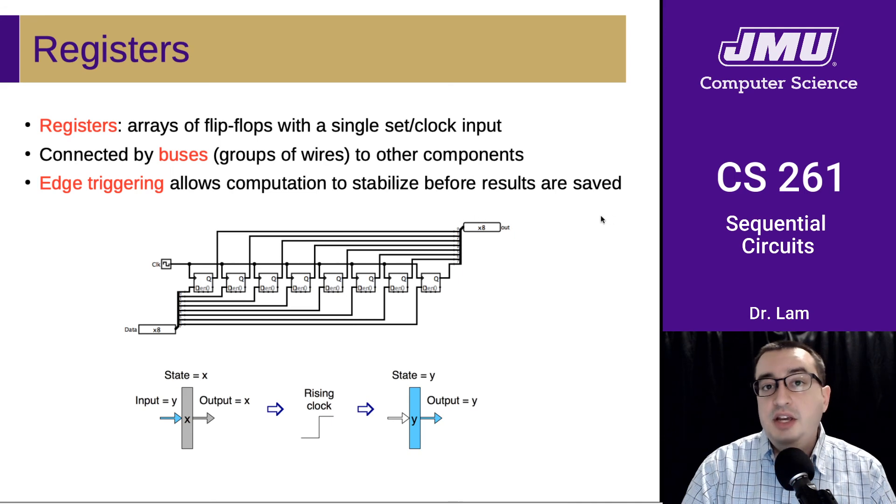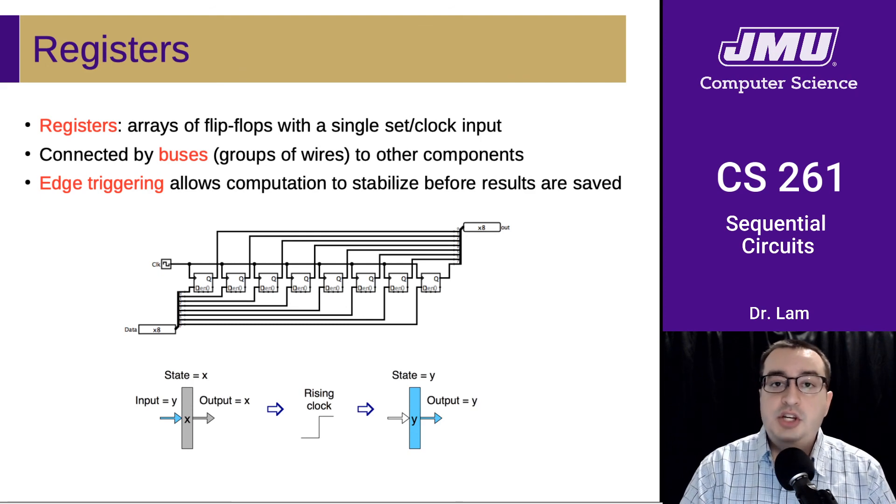And then that value will stay there during the execution so that it can be read out and used by the rest of the logic, which will probably be mostly combinational to calculate the new values for the next cycle. And this will just keep repeating over and over again.